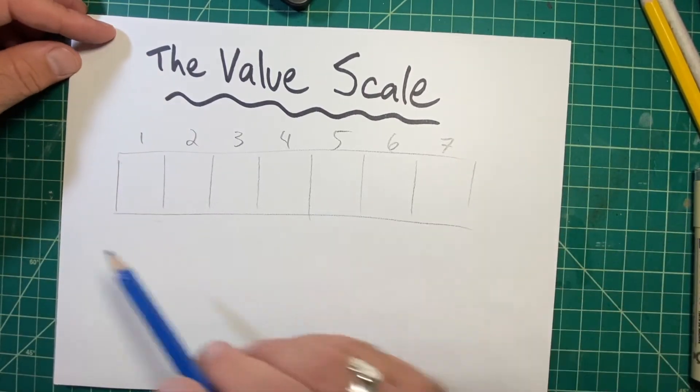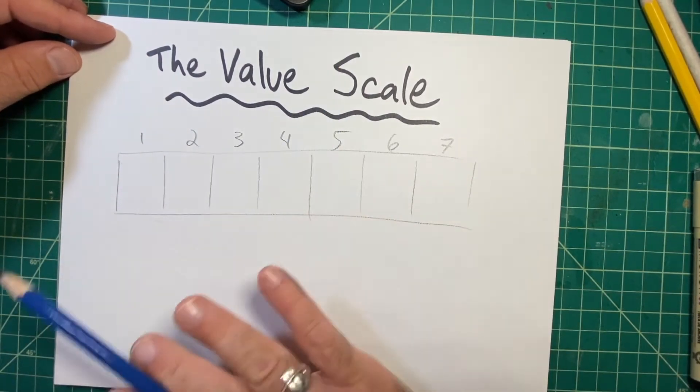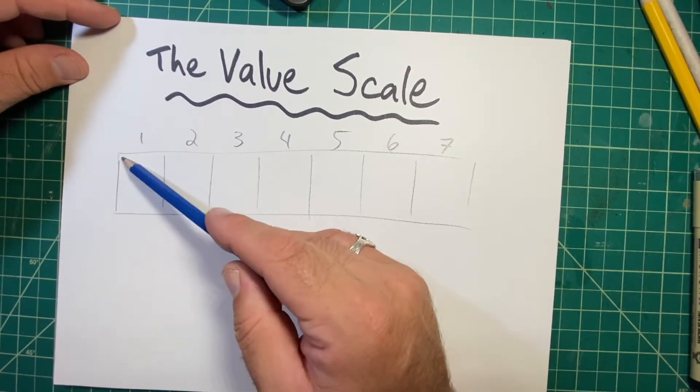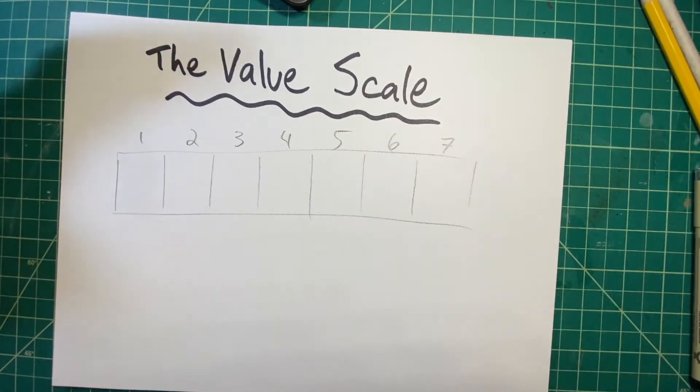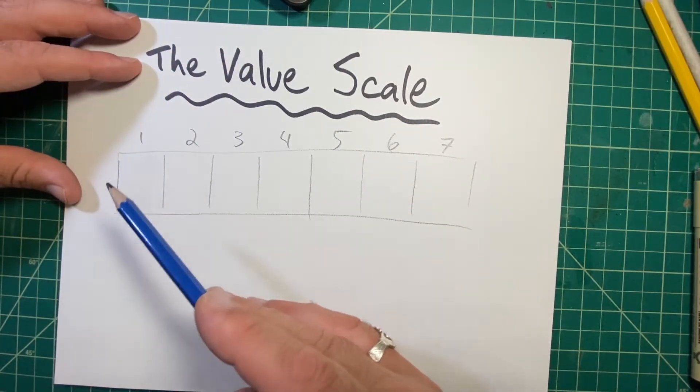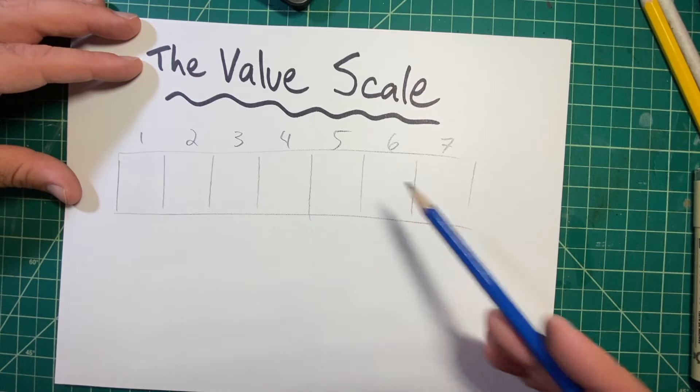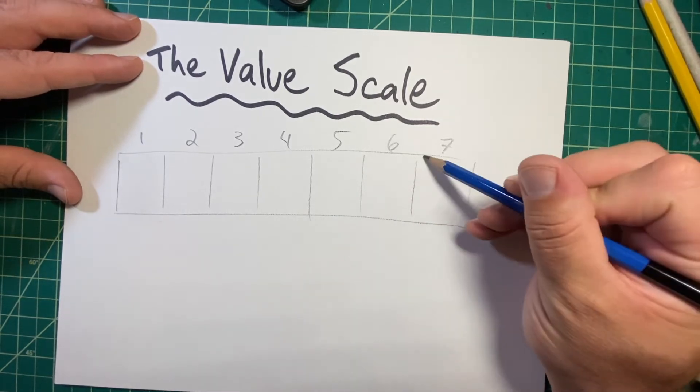Now, I'm going to leave one completely blank or white. You could add a tiny bit of tonal shading if you want, but it's really unnecessary. The idea is that from one onward, it's going to get progressively darker, and seven will be the darkest.